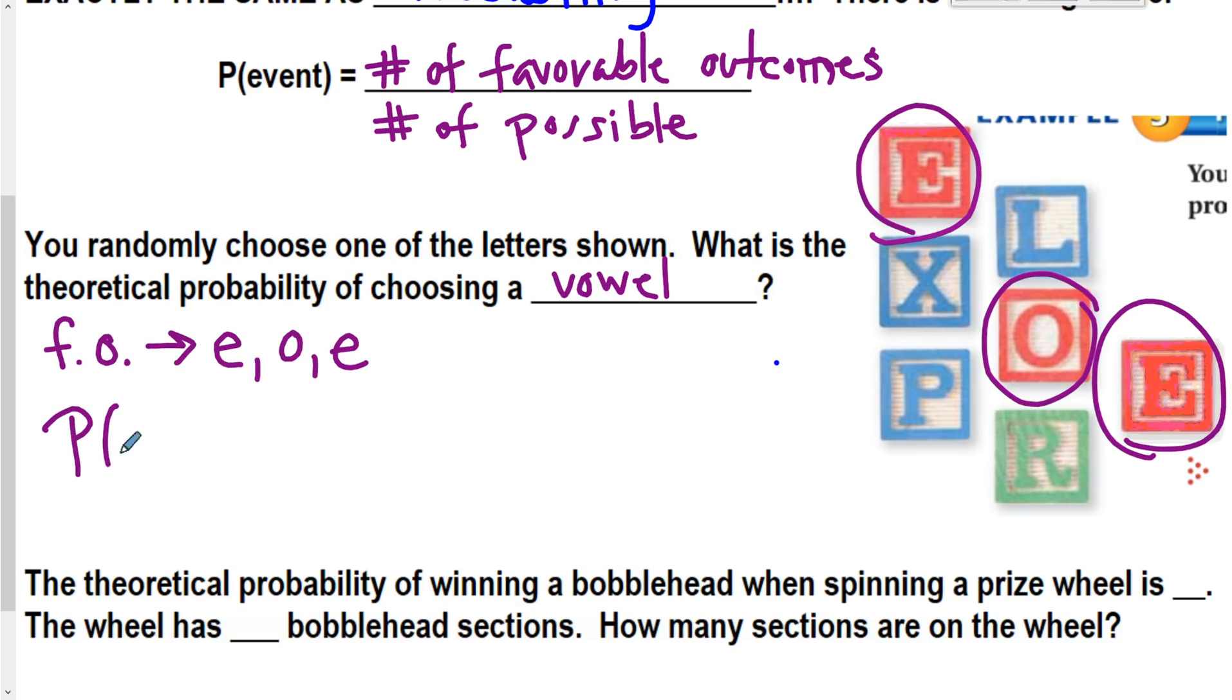So, probability of a vowel. There's three vowels I could choose from, and then, so that's my numerator. My denominator is how many blocks there are in total. There are seven blocks in total.